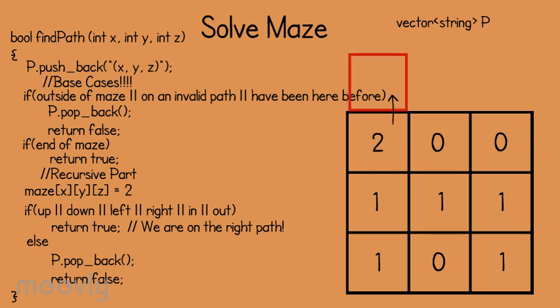First, we check the spot above us. We run through the base cases. We're not outside the maze, not on an invalid path, haven't been here before, and we're not at the end. We mark this spot and check the surrounding spots. First, we check the spot above us again. Have we already been to this spot in the maze? Yes. So we return false here and continue with the previous instance of the function.